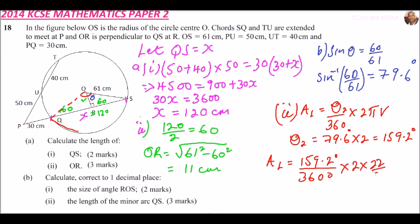Always remember, unless it is specified, always use 22 over 7 as π. And you can compute using your calculator, you get it is 169.5 cm. So that is the correct answer.